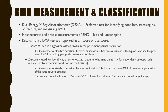The Z-score is expressed as the number of standard deviations between an individual's bone mineral density and the mean bone mineral density of a reference population of the same sex, age, and ethnicity. It's useful for identifying premenopausal individuals who may be at risk for secondary osteoporosis. For premenopausal individuals, a Z-score of minus 2.0 or lower is considered below the expected range for age.